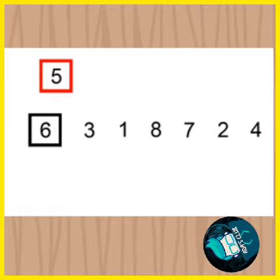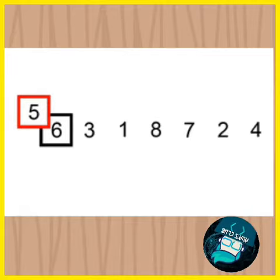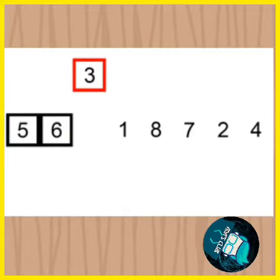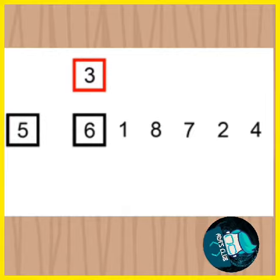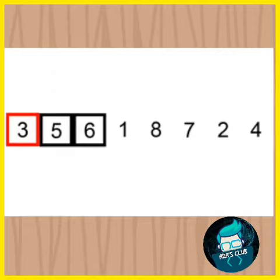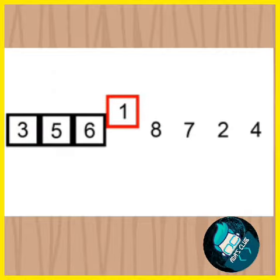Now, 5 is compared with 6 and placed before 6 as 5 is smaller than 6. Now, 5 and 6 becomes the sorted list then 3 is compared with 6 and 5 and placed before 5 as it is smaller than both 6 and 5.